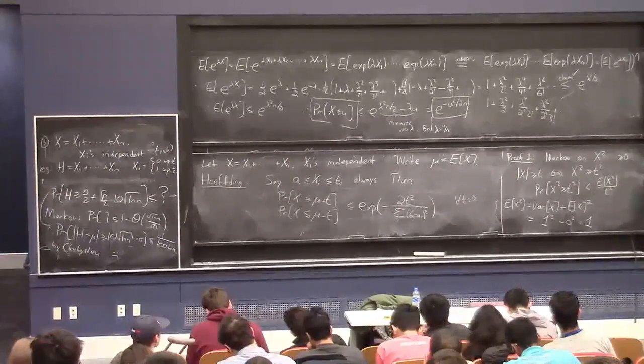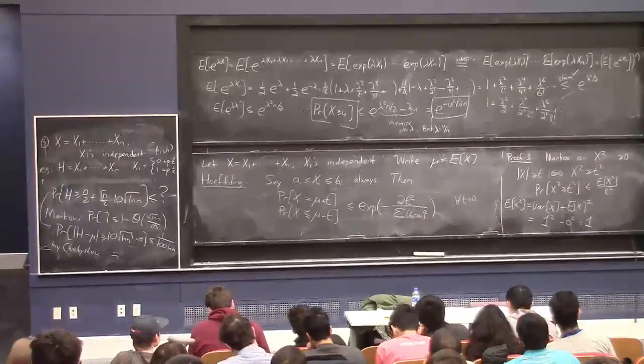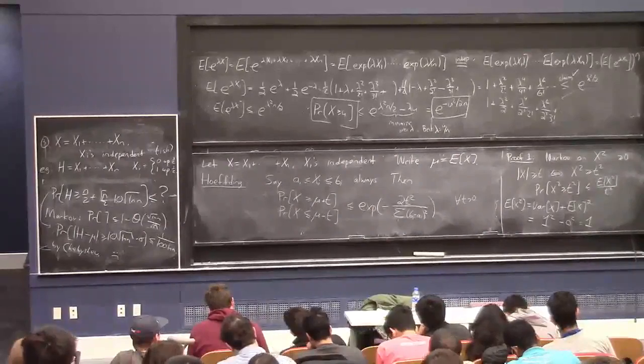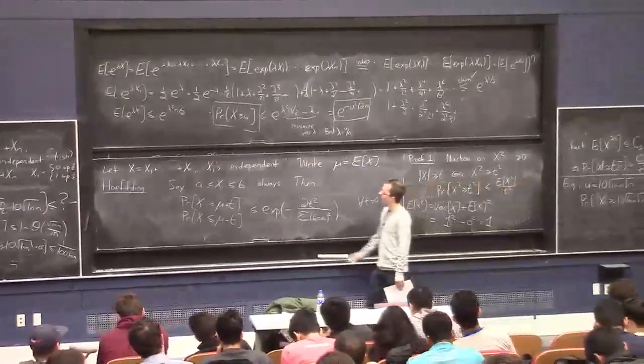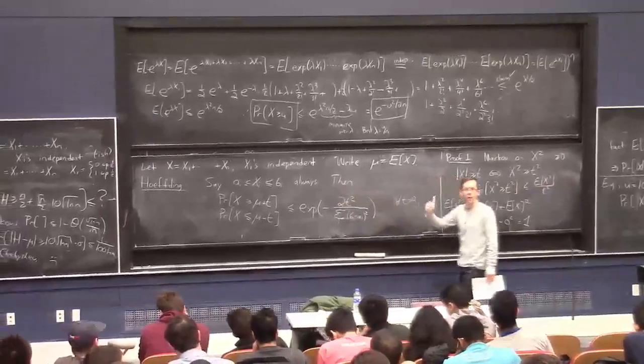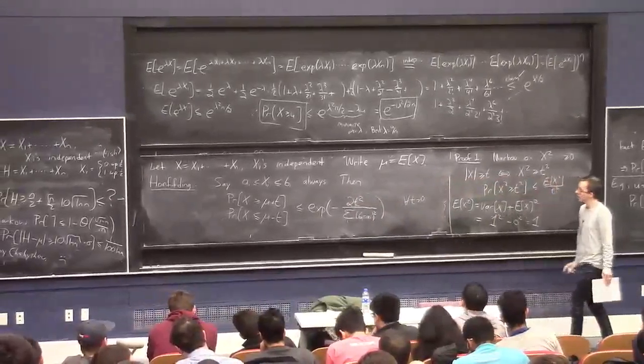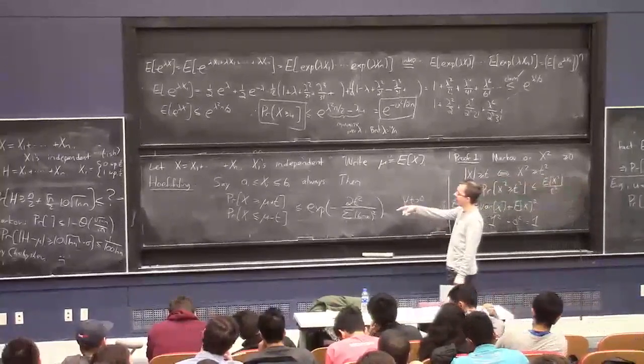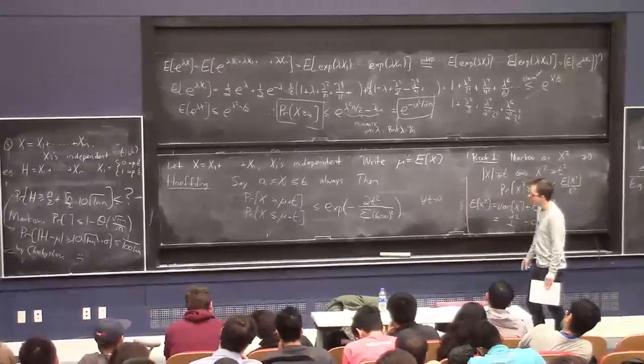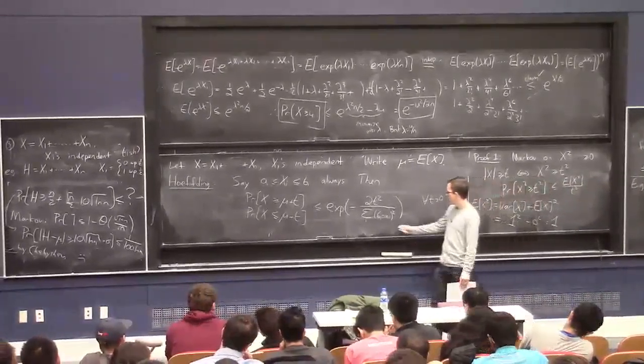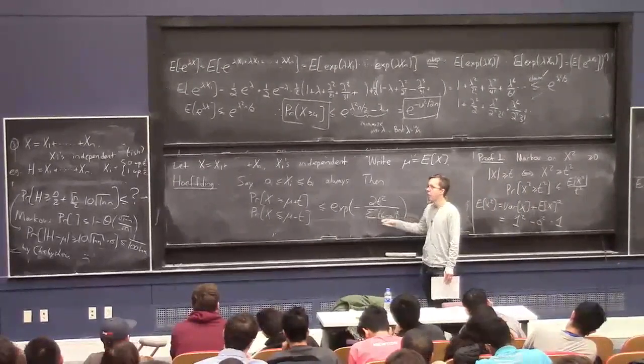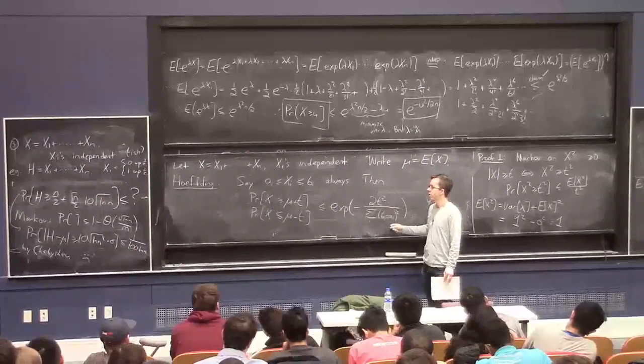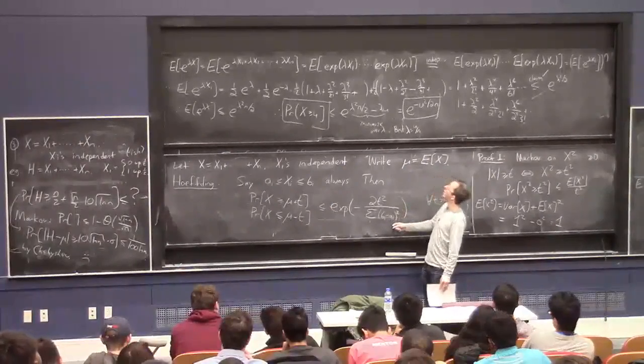In particular, you can use it, it should give us back the result we just proved, the result we just proved for this case, where the X's are plus or minus 1 with 50% chance each. In that scenario, we can take all the A's to be minus 1, all the B's to be plus 1. So this is 2 squared, which is 4. So the denominator is 4n. Cancel the 2's, you get T squared over 2n. I called it U up there, but it's T here.